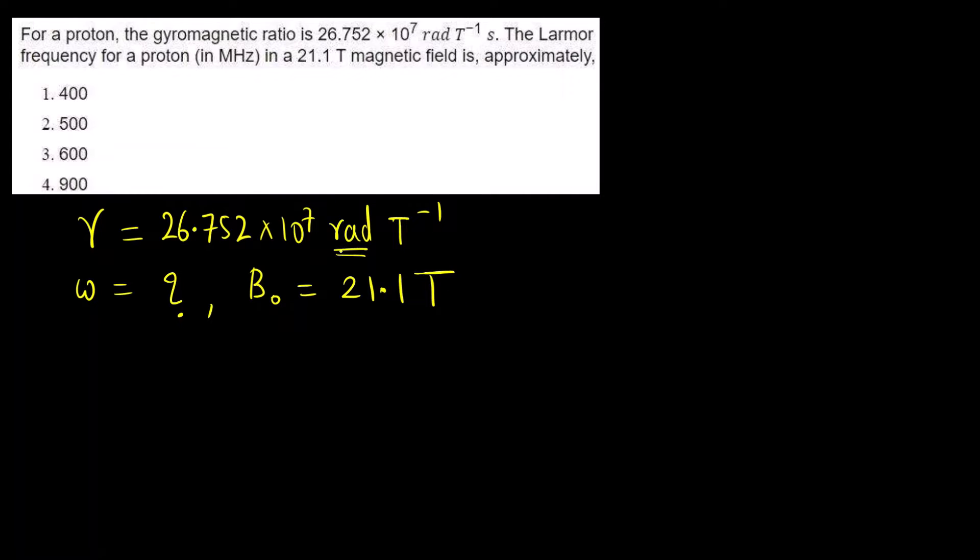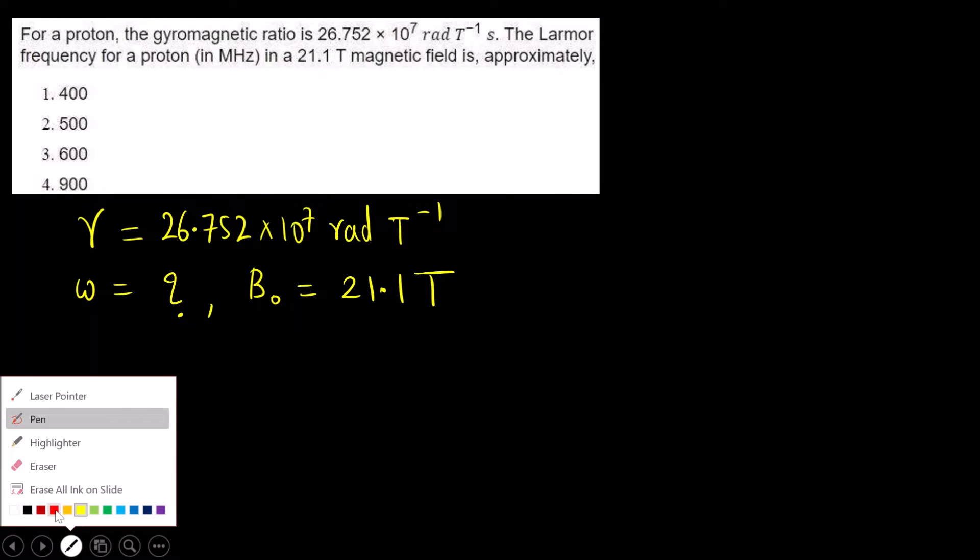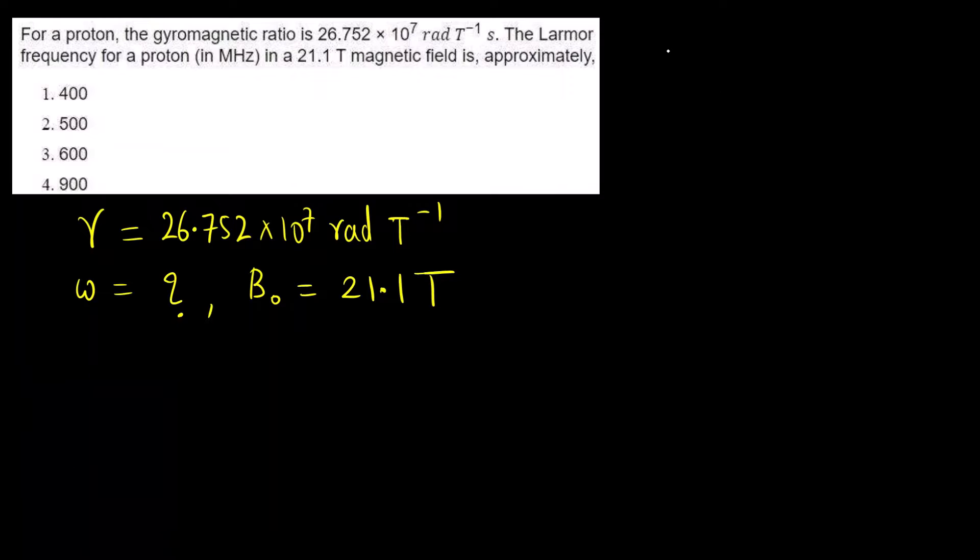What is this radian? That is something interesting. I'll tell you how we get that. Initially if you see the formula, Larmor frequency is equal to the gyromagnetic ratio if it is in radians, radian per second, multiplied by external magnetic field that is B.